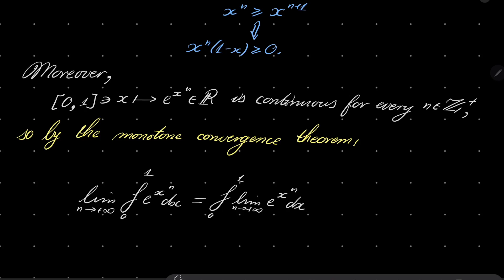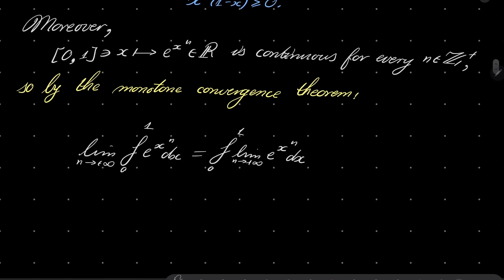What's the limit as n goes to infinity? Well, it's pretty easy to see that if x is between 0 and 1, then e to the power x to the power of n converges to what exactly? Well, it converges to e to the power of 0, which is 1.